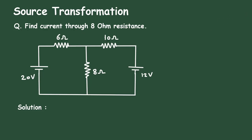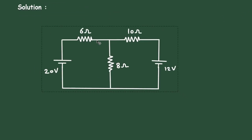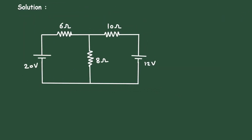Solution. First of all, we can see we can convert this voltage source into its equivalent current source. When we convert a voltage source to a current source, the series resistor will be converted into a parallel resistor. So this 6 ohm will be in parallel with this current source.